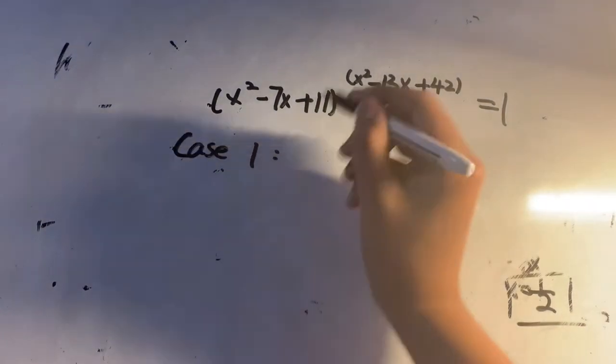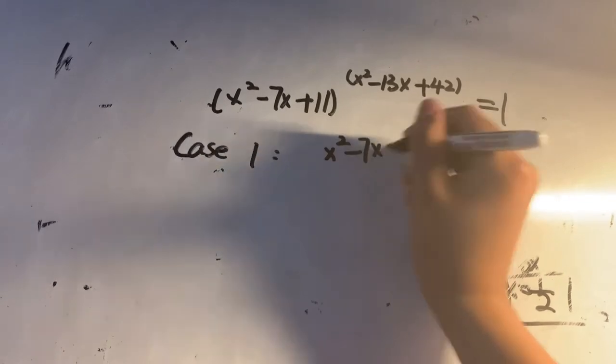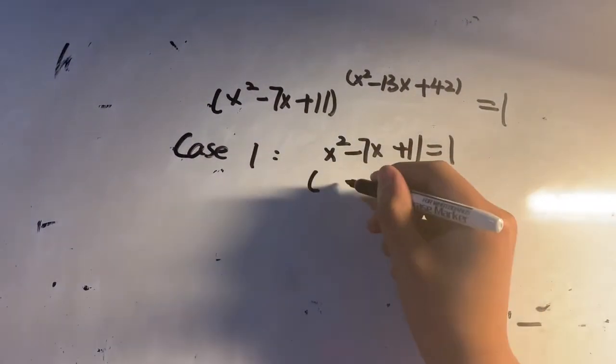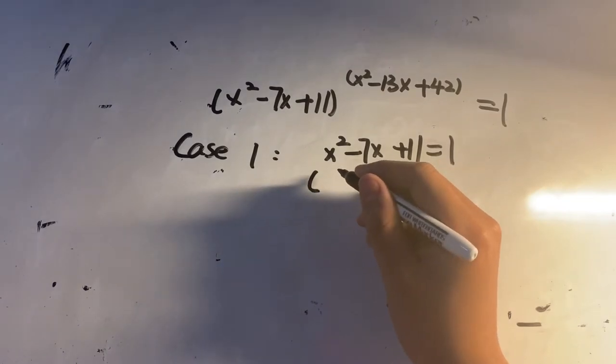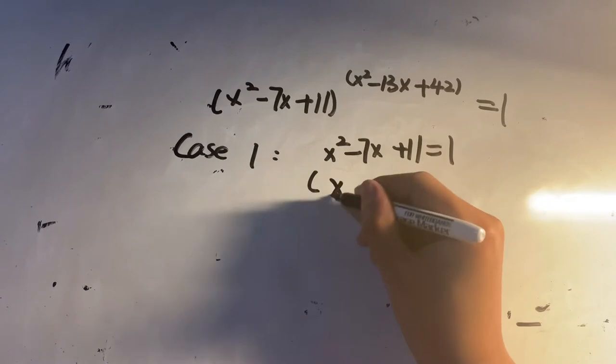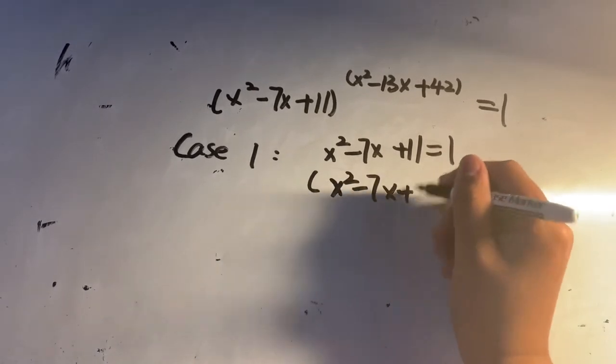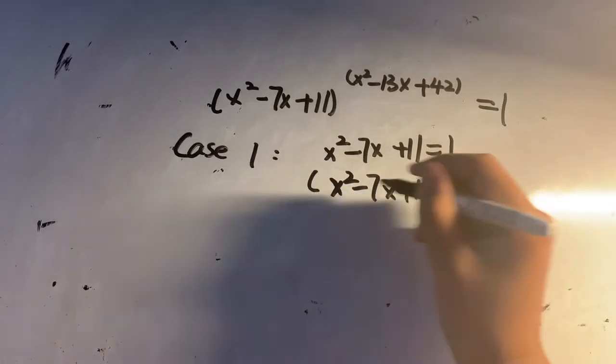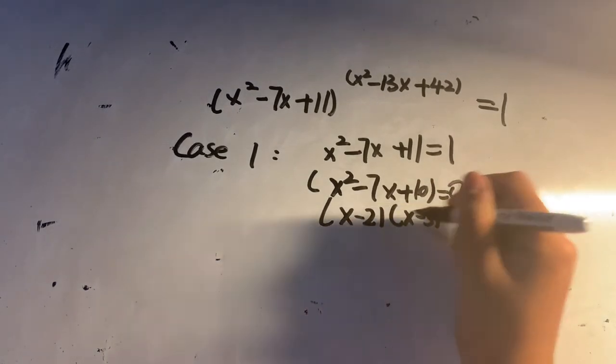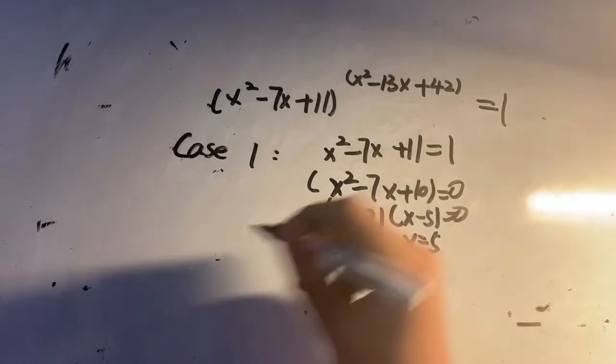Case 1: x squared minus 7x plus 11 equals 1. So x squared minus 7x plus 10 equals 0. Factoring gives (x minus 2)(x minus 5) equals 0, so x equals 2 or x equals 5.